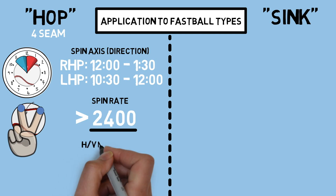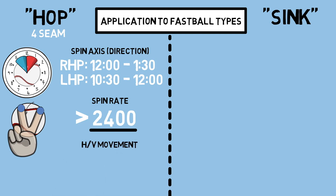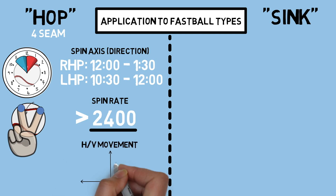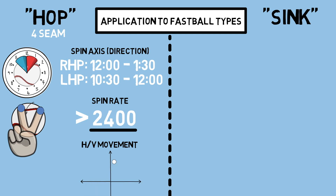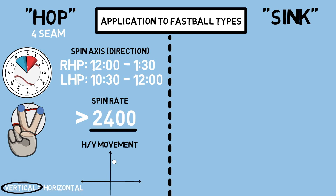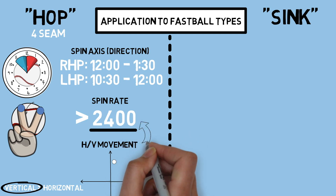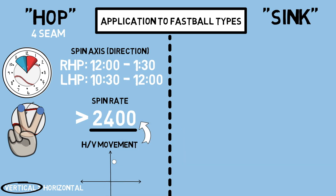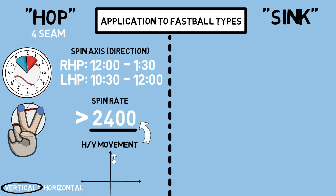Based on our two inputs, if we look at our vertical and horizontal break output — aka movement — you'll almost always see a higher vertical movement figure than horizontal movement for a fastball with hop. The higher your RPMs, the higher your vertical movement will be.